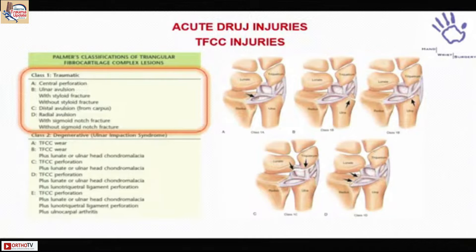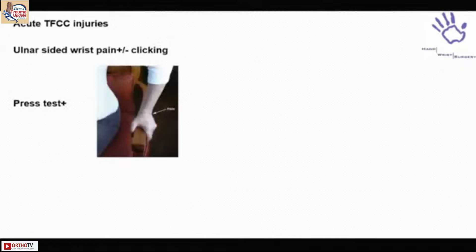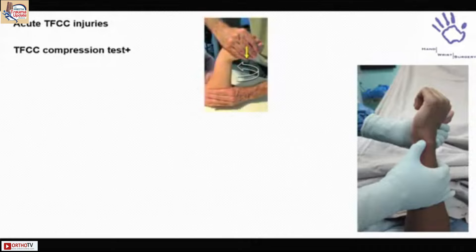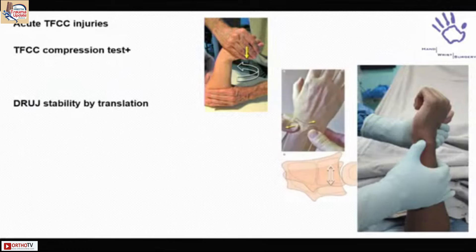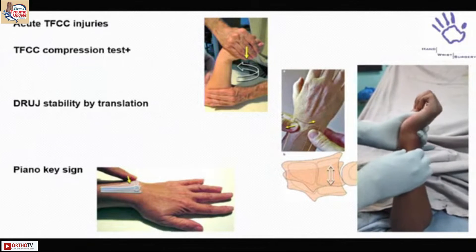The patient presents with ulnar-side wrist pain with or without clicking. With axial loading they develop pain. There is tenderness at the fovea, and the TFCC compression test is usually positive — you compress and rotate the forearm to locate which component is the pathology. Then you check for translation of the DRUJ, and in chronic cases you may find the piano key sign: you push the ulna in and it pops back out.